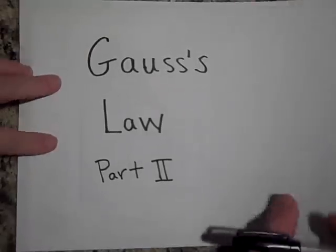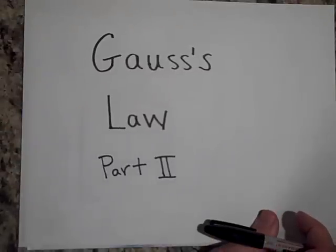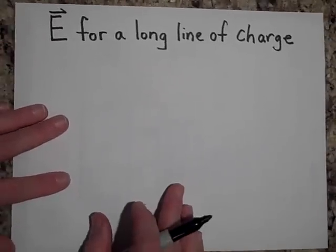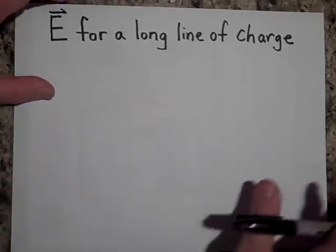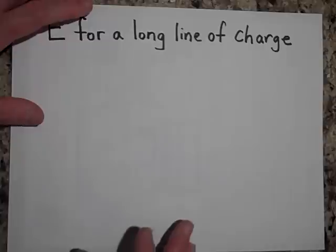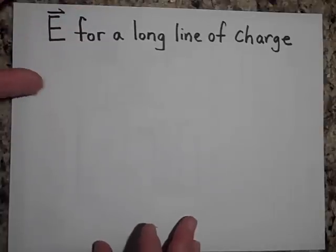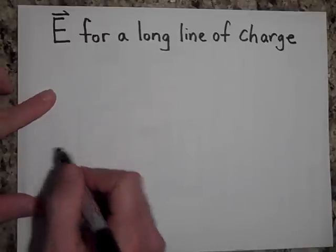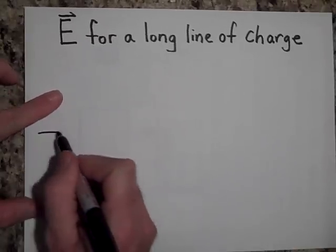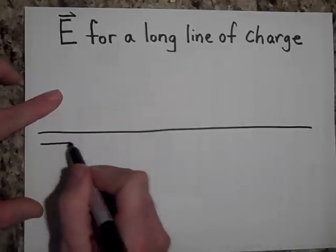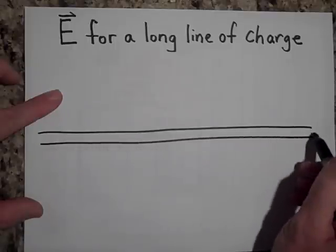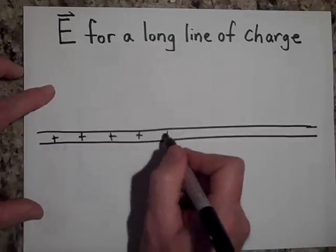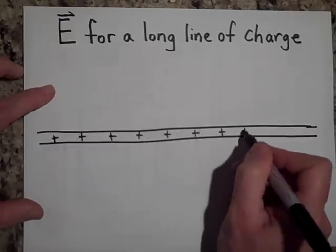Gauss's Law Part 2. If you remember in the last unit we found the electric field due to a long line of charge, and it took me two YouTube videos to do that — about 20 minutes. I'm going to do it now in one video, and the way I'm going to do that is: if this is the long line of charge, let's say that line of charge is positively charged. Last time I made it vertically; this one I'm making horizontally.